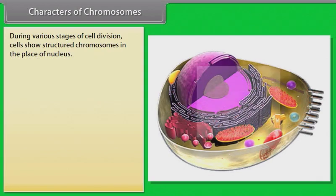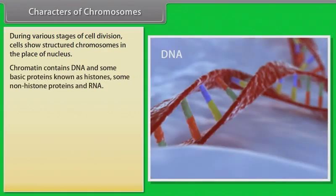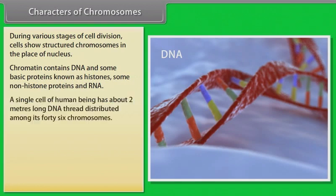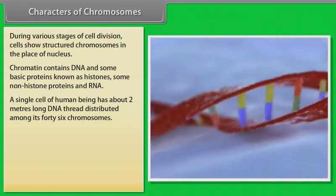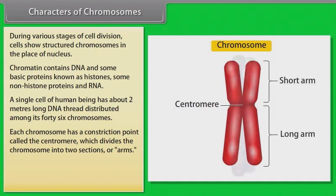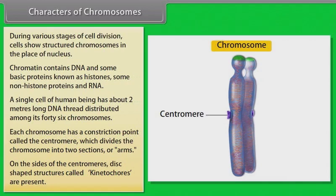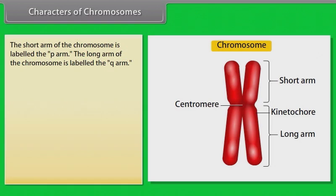Characters of chromosomes: During various stages of cell division, cells show structured chromosomes in place of the nucleus. Chromatin contains DNA and some basic proteins known as histones, some non-histone proteins, and RNA. A single cell of a human being has about 2 meters of DNA thread distributed among its 46 chromosomes. Each chromosome has a constriction point called the centromere, which divides the chromosome into two sections or arms. On the sides of the centromere, disc-shaped structures called kinetochores are present.